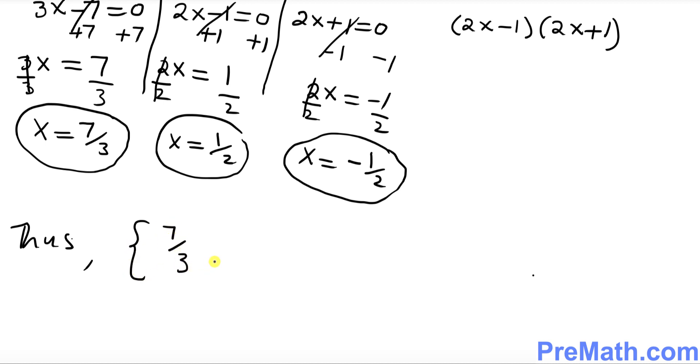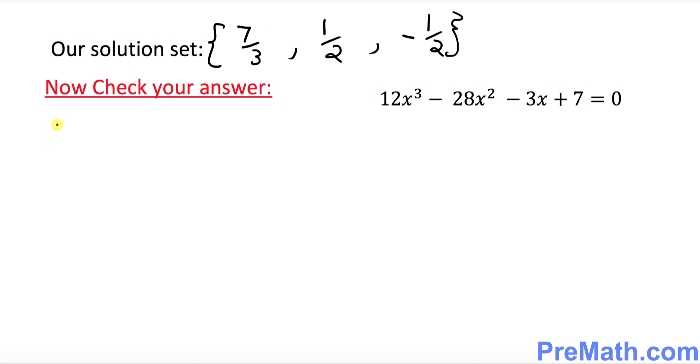So thus our solution set turns out to be 7 third, then we have 1 over 2, and then we have negative 1 over 2. And that is our answer. The next step is we want to check our answer.